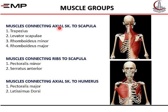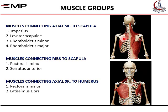We can categorize the muscles that connect the axial skeleton with the bones of the upper limb into three groups. First, muscles connecting the axial skeleton to the scapula — these include the trapezius, levator scapulae, rhomboidus minor, and rhomboidus major. Second, muscles connecting the ribs to the scapula — the pectoralis minor and the serratus anterior. Third, muscles connecting the axial skeleton to the humerus — the pectoralis major and the latissimus dorsi.